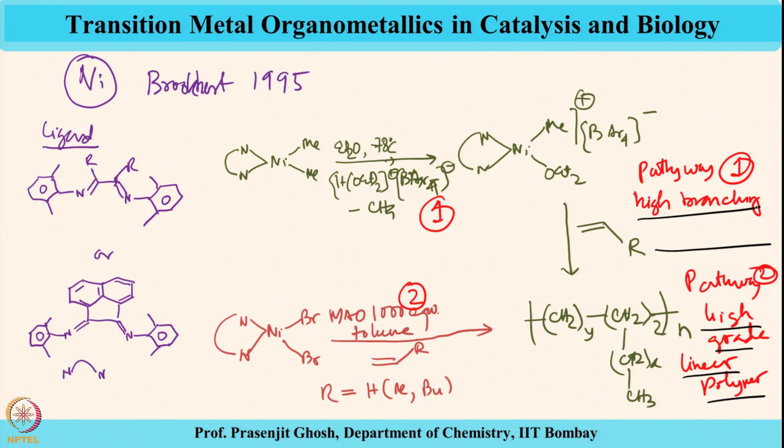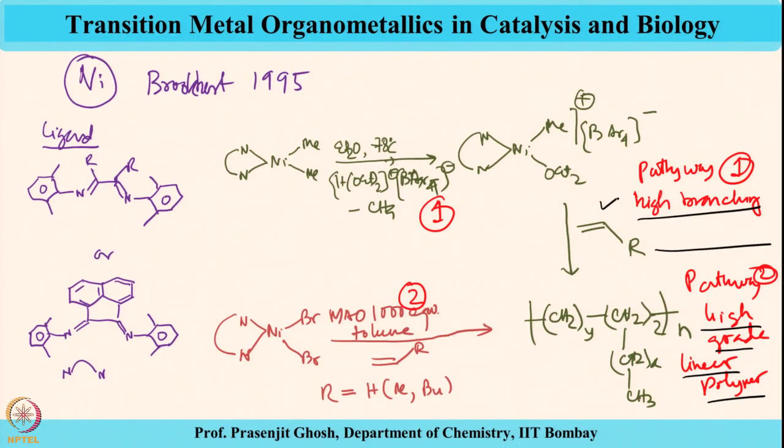This was nice work where Brookhart also put nickel on the map for making polymers, since the whole business started with the nickel effect and nickel was mainly used as an oligomerization catalyst. It is Brookhart's work which convincingly demonstrated that nickel can be used to make polymers. Nickel, being a late transition metal, has a propensity for chain walking during polymerization, and that is what explains the branching observed.